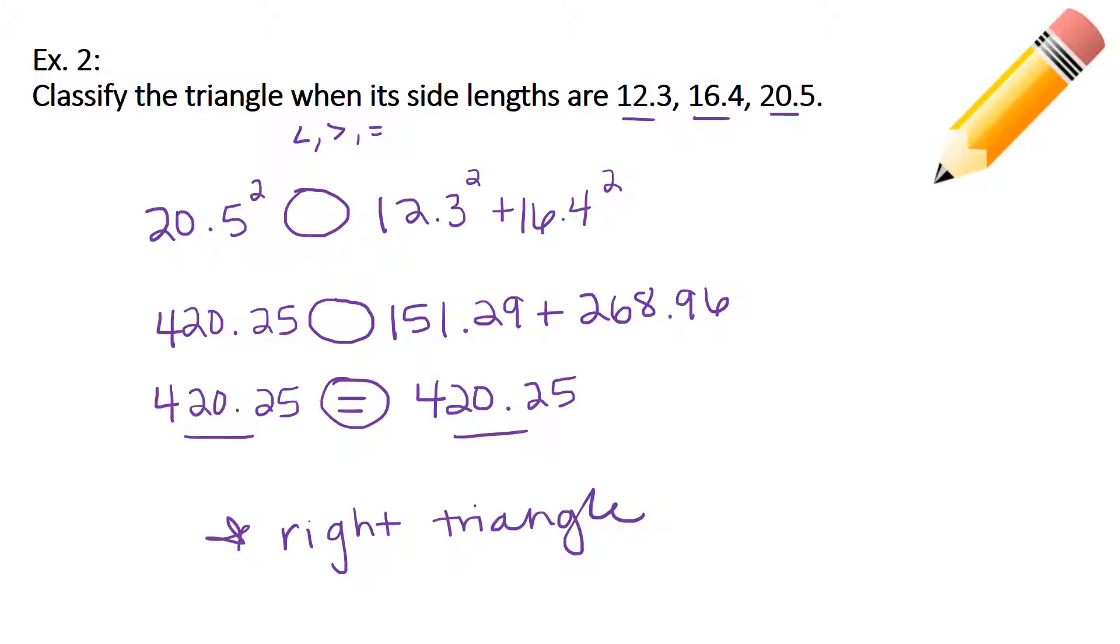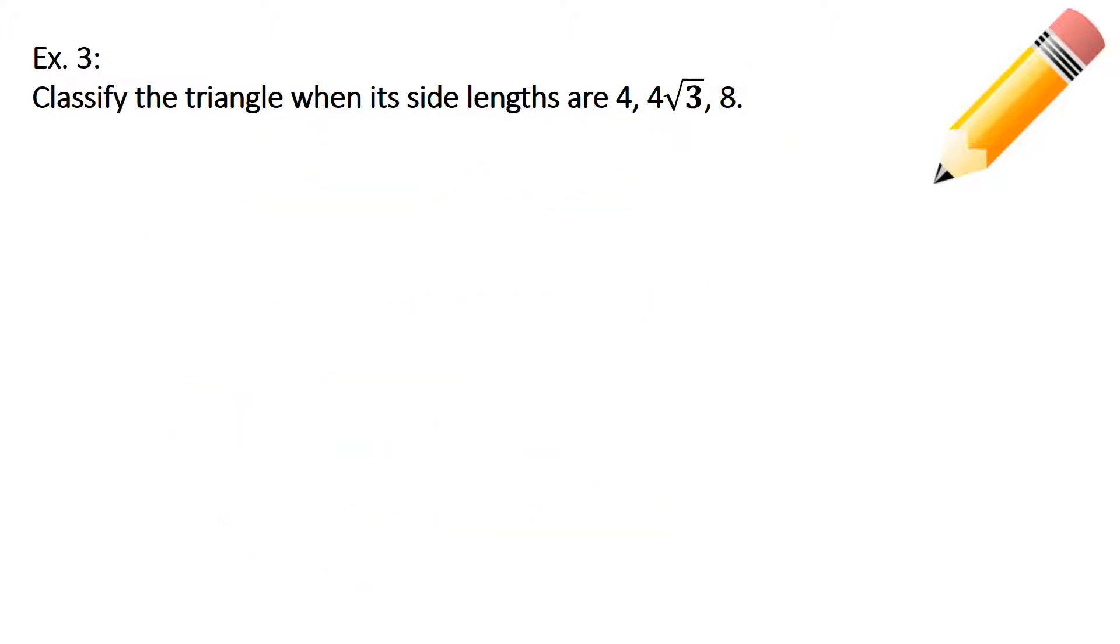Remember, check to make sure. Your first step is to make sure you figure out which value is C. Does it matter which one's A or B? Not necessarily. So then you plug in A squared plus B squared. Draw in that circle so you know that you have to fill it in with one of these three signs. These three signs help you to determine whether it's acute, obtuse, or a right triangle.